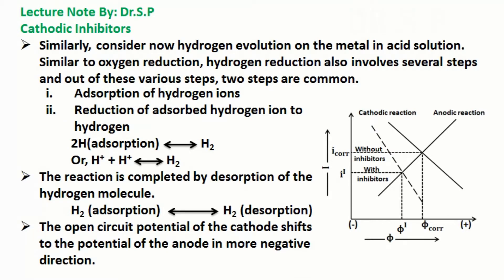The open circuit potential of the cathode shifts to the potential of the anode in a more negative direction, which is illustrated clearly in the figure.